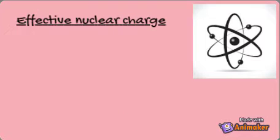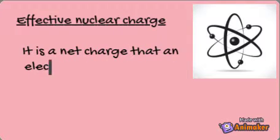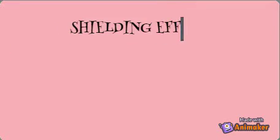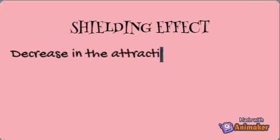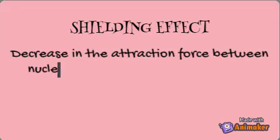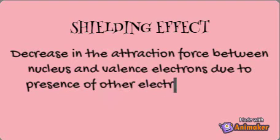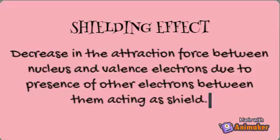The net charge that is experienced by the electrons in a polyelectronic atom is called effective nuclear charge. Valence electrons feel less than the actual charge due to the presence of other electrons between them acting as a shield. Shielding effect is defined as the decrease in attraction force between the nucleus and valence electrons due to the presence of inner electrons between them acting as a shield.